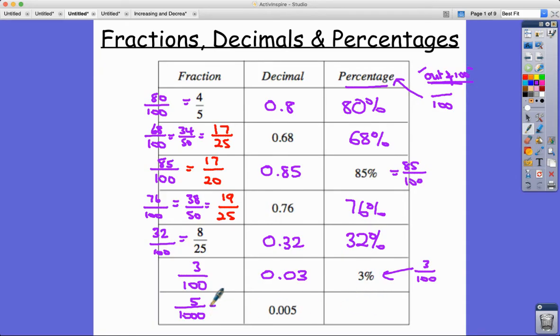Five over a thousand, let's simplify that. We can divide it by 5 of course and get 1 over 200. So 1 over 200, let's think about this. If we're making it into a percentage, if we half that we'd get 0.5 over 100, so it'd be 0.5 percent.